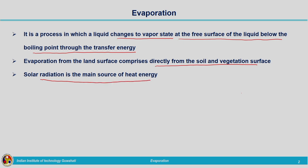Water molecules are under Brownian motion, moving in any direction and colliding with each other, with continuous energy dissipation taking place. Extra energy coming from solar heat is absorbed by these molecules, increasing the energy level of each molecule on the surface. When it reaches above a certain threshold level, the molecules are freed from surface tension forces and escape from the water surface in the form of vapor, moving towards the atmosphere.